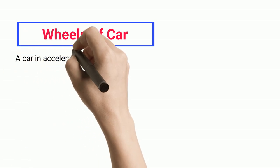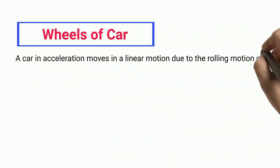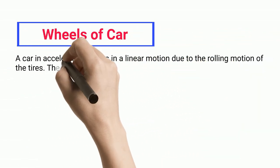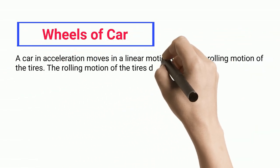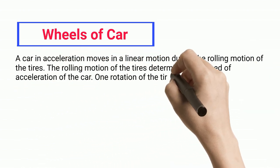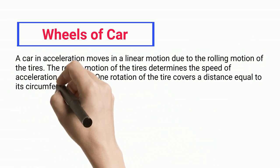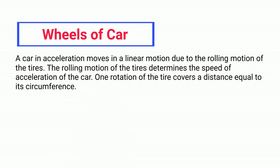Wheels of car. A car in acceleration moves in a linear motion due to the rolling motion of the tires. The rolling motion of the tires determines the speed of acceleration of the car. One rotation of the tire covers a distance equal to its circumference.